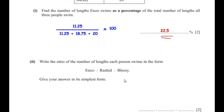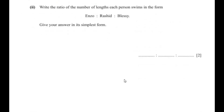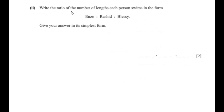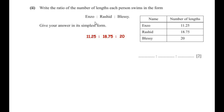Now let us move to the next sub-question: write the ratio of the number of lengths each person swims in the form Enzo to Rashid to Blessie, and give your answer in its simplest form. From the table the lengths are: Enzo 11.25, Rashid 18.75, and Blessie 20.